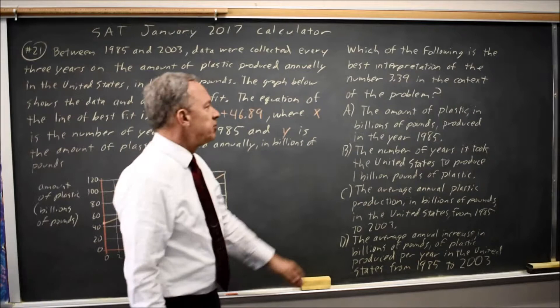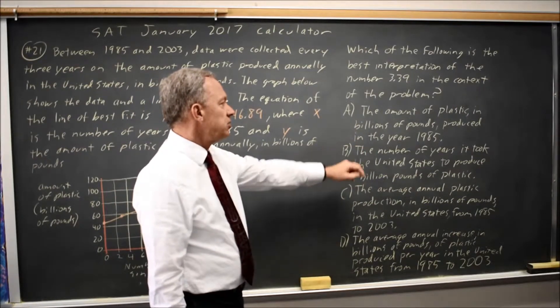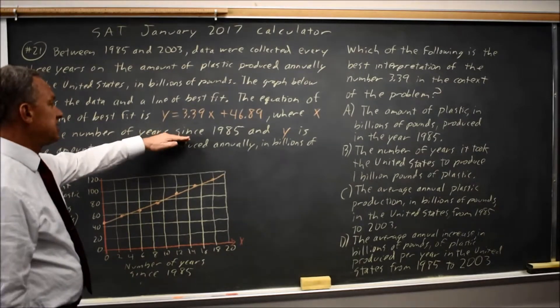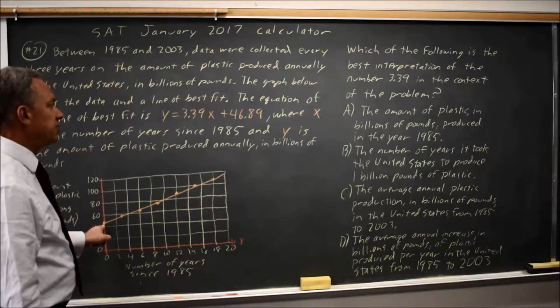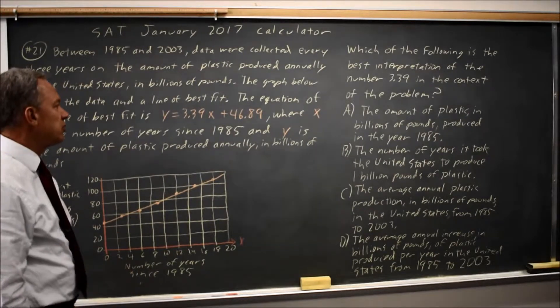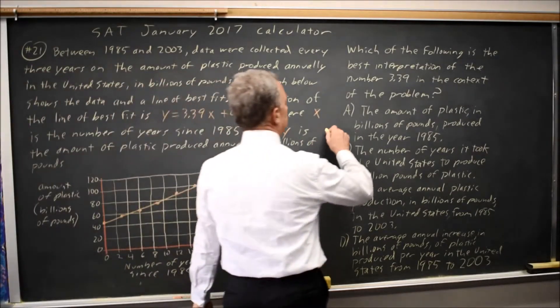Choice A is the amount of plastic in billions of pounds produced in the year 1985. But 1985 is zero years since 1985, so that would be the Y intercept. Choice A should be 46.89, but they're asking about the 3.39, so A is not correct.